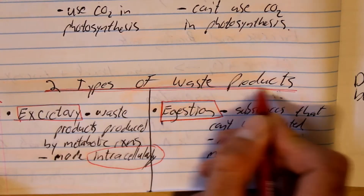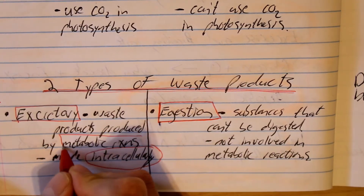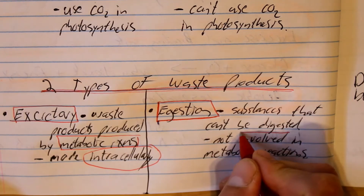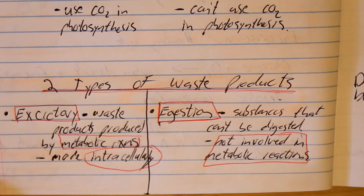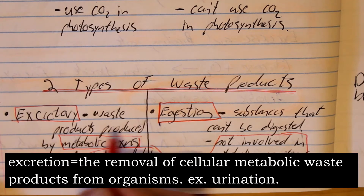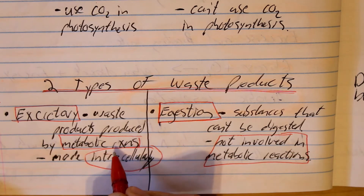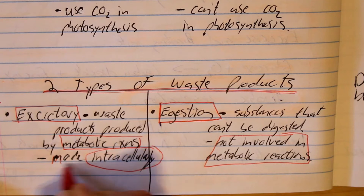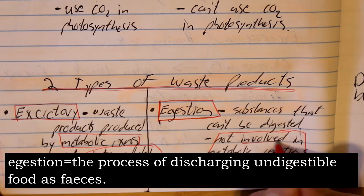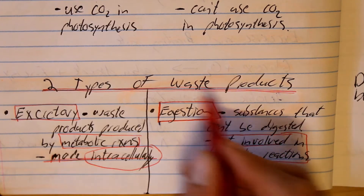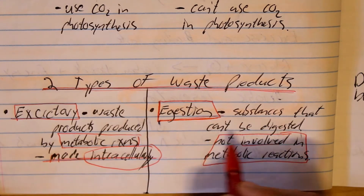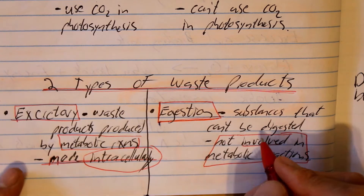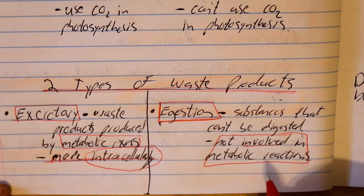There are two types of waste products: products produced by metabolic reactions, and products that are not produced by metabolic reactions. Our excretory waste are products which are produced by metabolic reactions — for example, carbon dioxide in the process of respiration. These waste products are made intracellularly. On the other side, we have products not involved in metabolic reactions. These get eliminated via egestion — these are substances that can't be digested, for example, cellulose that just passes through our alimentary canal.